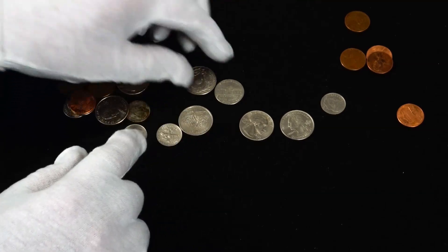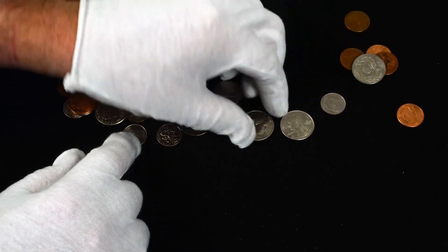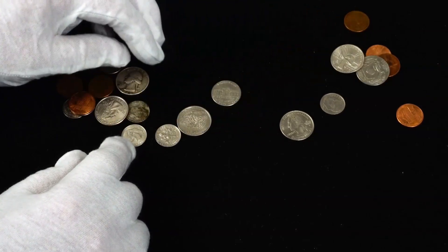And quarters are sometimes easy to go through because they're either State, America the Beautiful, or American Women's series, so you can set those aside.